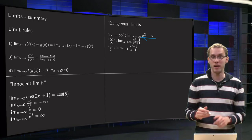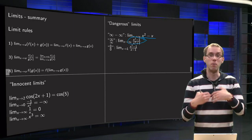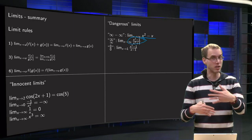Other example: infinity over infinity. Limit x squared minus 1 over x squared plus 1. You have infinity over infinity, what happens then? You cannot just cancel out the infinities.